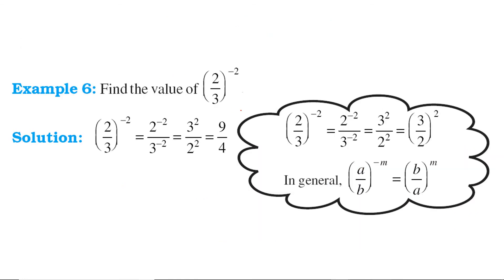We have to find the value of 2 by 3 to the power minus 2. You can take the numerator and denominator separately: 2 to the power minus 2 divided by 3 to the power minus 2. Change the negative powers to positive: 3 squared is 9 and 2 squared is 4, so the answer is 9 by 4.